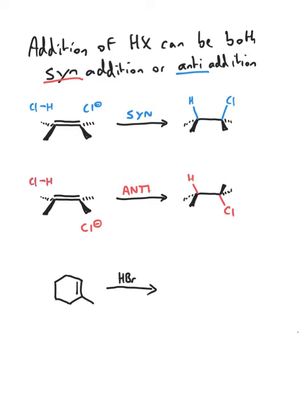whilst anti-addition will occur when the proton adds to one face and the chloride adds to the other. So, what would be the product of this reaction if the addition were to be syn? Make sure to show stereochemistry in your product. You may pause now, and here's the answer.